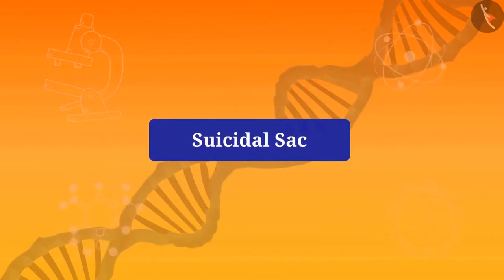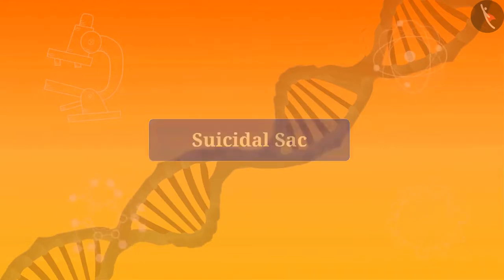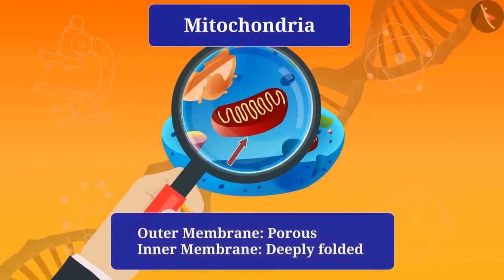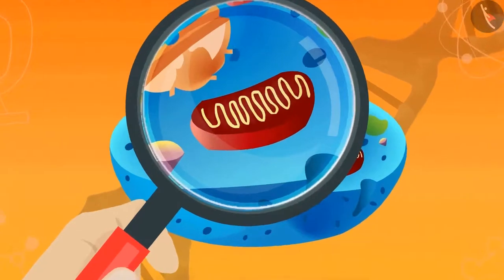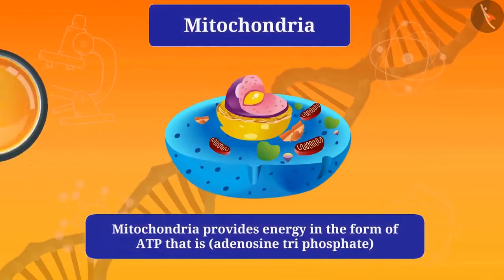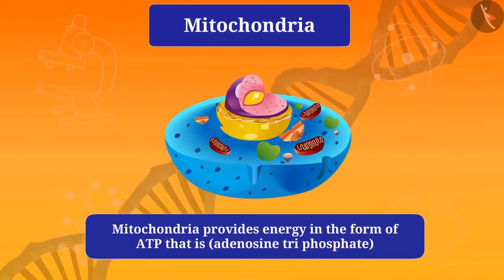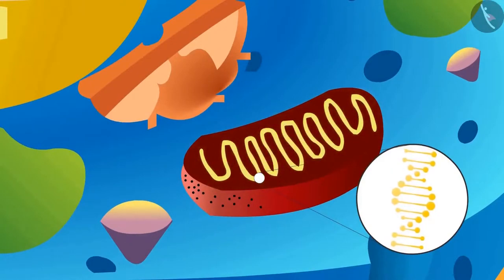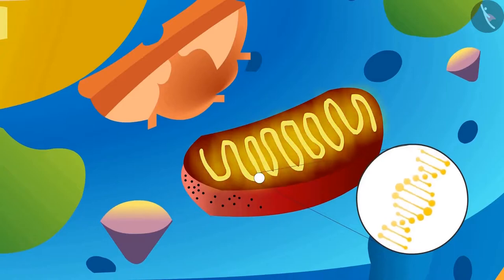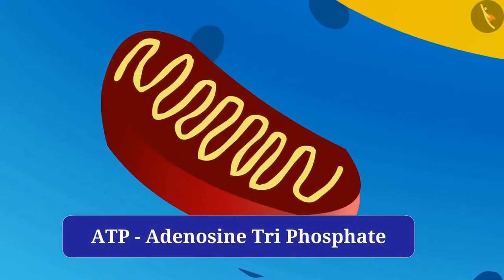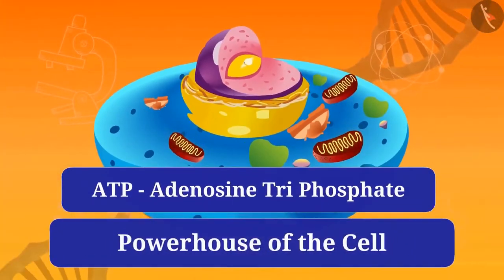Inside the cell, broken parts of cell organelles and residual material coming from outside — such as bacteria, food, etc. — go into the lysosomes, where digestive enzymes break them into small pieces and cleanse the cell. When a cell is damaged or dead, the lysosomes burst and the enzymes digest the cell itself — hence, lysosomes are called the suicidal sac of the cell. Now let's learn about mitochondria. Mitochondria have a double-layered membrane — the outer membrane is porous and the inner membrane is deeply folded. Mitochondria are where the cells get energy to perform essential functions, as they have their own DNA and ribosomes that can make proteins and energy in their inner membranes. Mitochondria provide energy in the form of ATP (adenosine triphosphate) — which is why they are called the powerhouse of the cell.